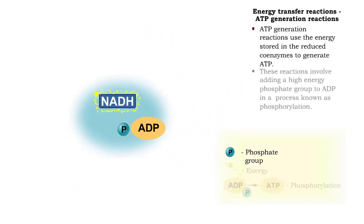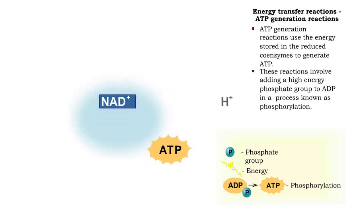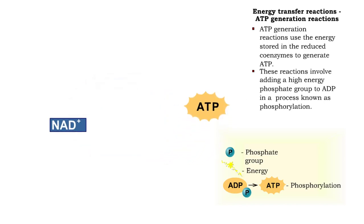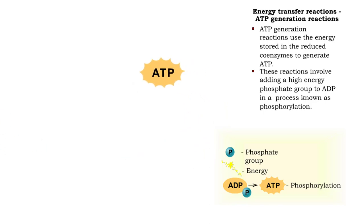A high-energy phosphate group is added to ADP in this reaction. This process is called phosphorylation.